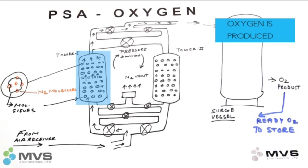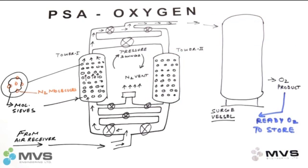Then we switch over to tower two, which gets pressurized by compressed air and starts producing oxygen. Meanwhile, tower one is depressurized and the nitrogen molecules are released back into the atmosphere through a vent port. Product oxygen from both towers is collected in an oxygen surge vessel.